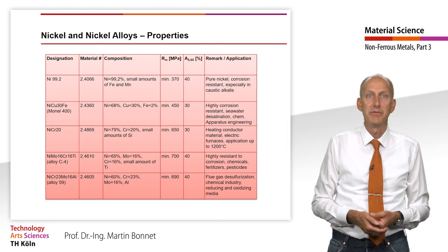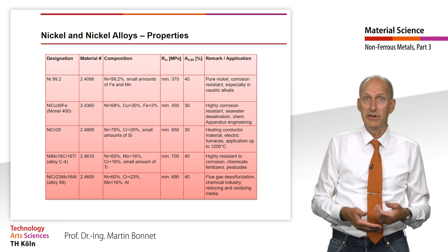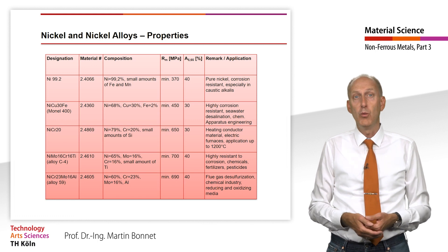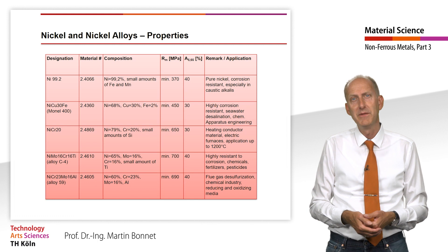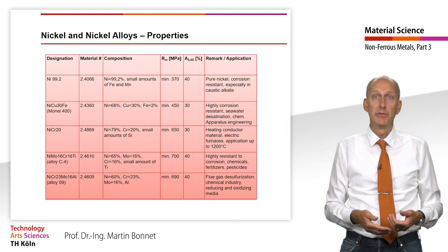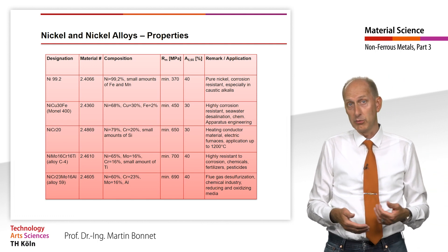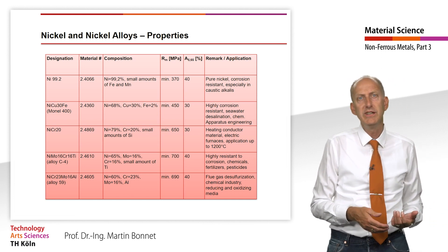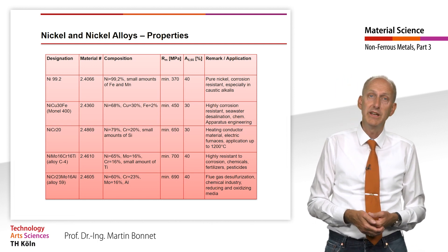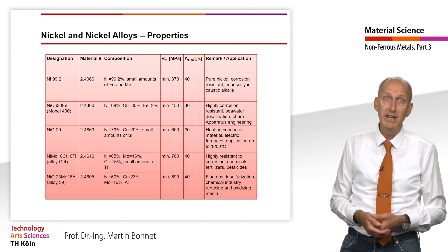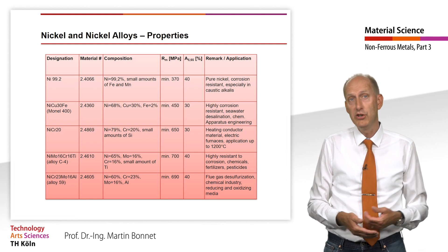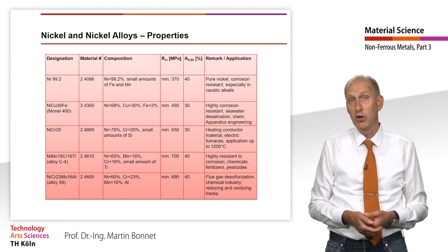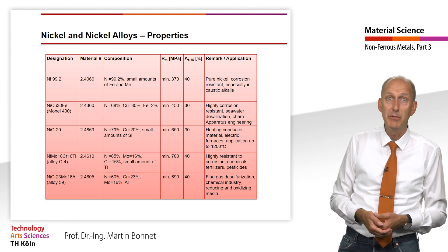Nickel-based alloys with chromium and molybdenum as main alloying elements are, due to their excellent corrosion resistance in both oxidizing and reducing corrosion media, always used where the resistance of high-alloy or cyanidic stainless steel is no longer sufficient. They also form stable passive layers consisting of chromium oxide and, in some cases, molybdenum oxide. Chromium contents vary between 15 and 24%, molybdenum contents between 3 and 18%. Additional alloying elements can be iron, aluminum, titanium, or niobium. Two alloys mainly used here are NiMo16Cr16Ti and NiCr23Mo16Al.